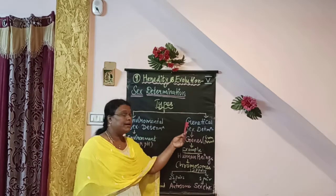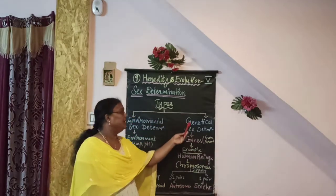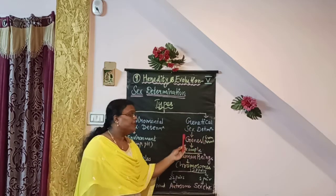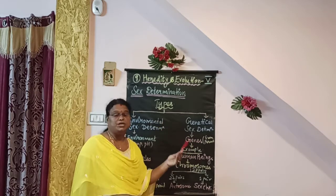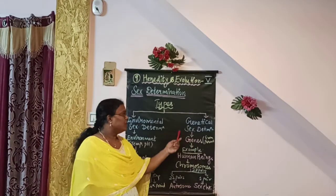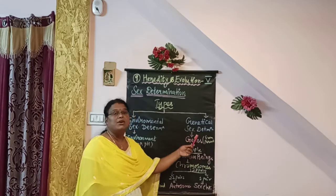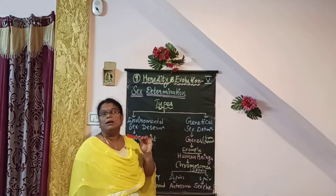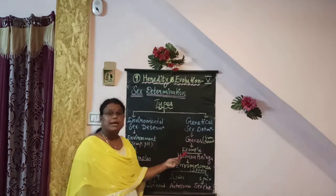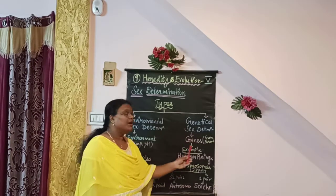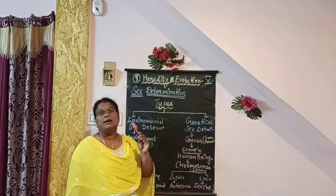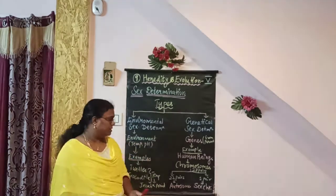The next important type of sex determination is genetical sex determination. In genetical sex determination, genes from both parents — the maternal parent and the paternal parent — determine the gender of a child. The best example of genetical sex determination is human beings.